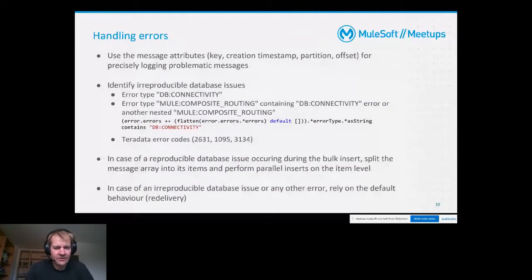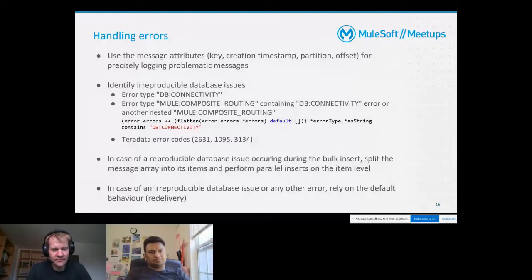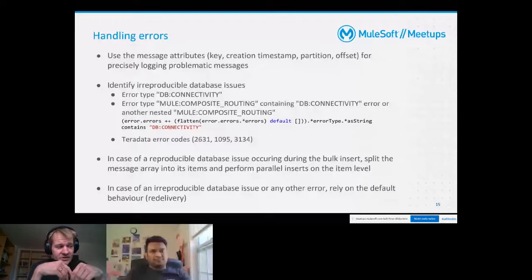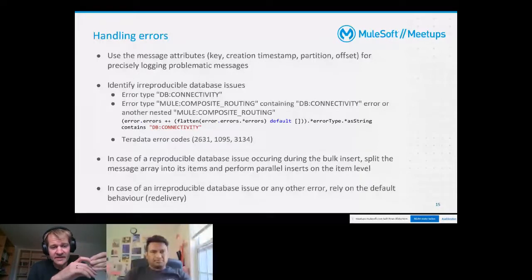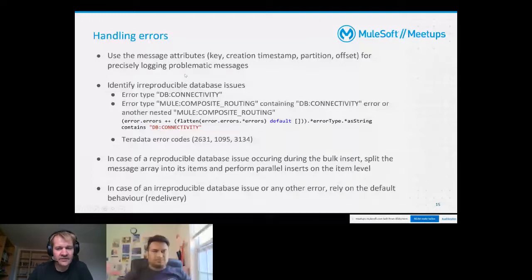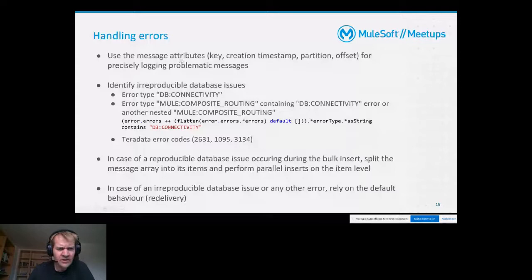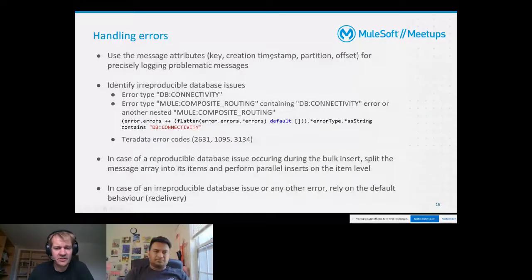When handling errors - we have several kinds. We have errors which might occur when a message is invalid. We might also have irreproducible database errors when the database system is not available, or reproducible ones when the data is valid JSON but not in the expected structure. In general, when you log problematic messages using a log table, I recommend making use of the message attributes of Kafka topic messages: the key, creation timestamp, partition, and offset. This will give you the most detailed information for finding and investigating a message.